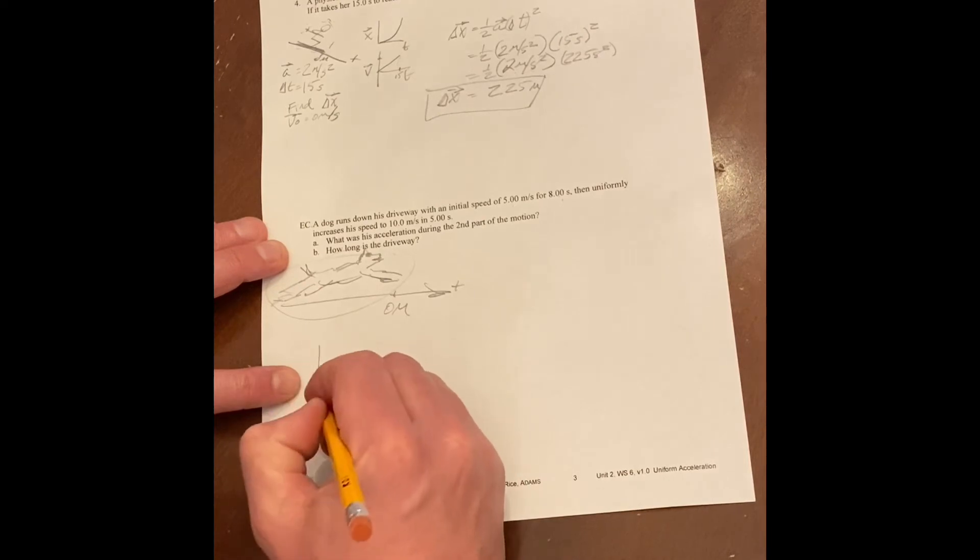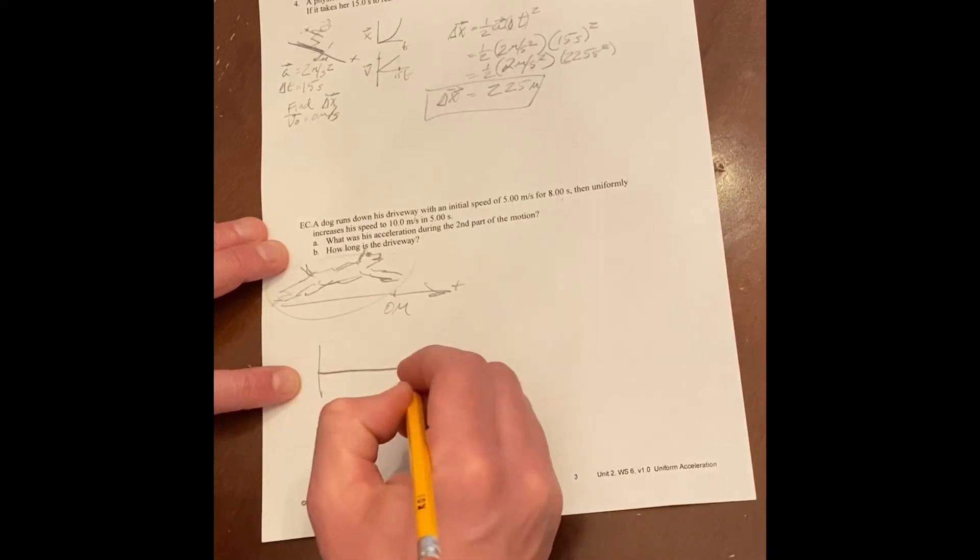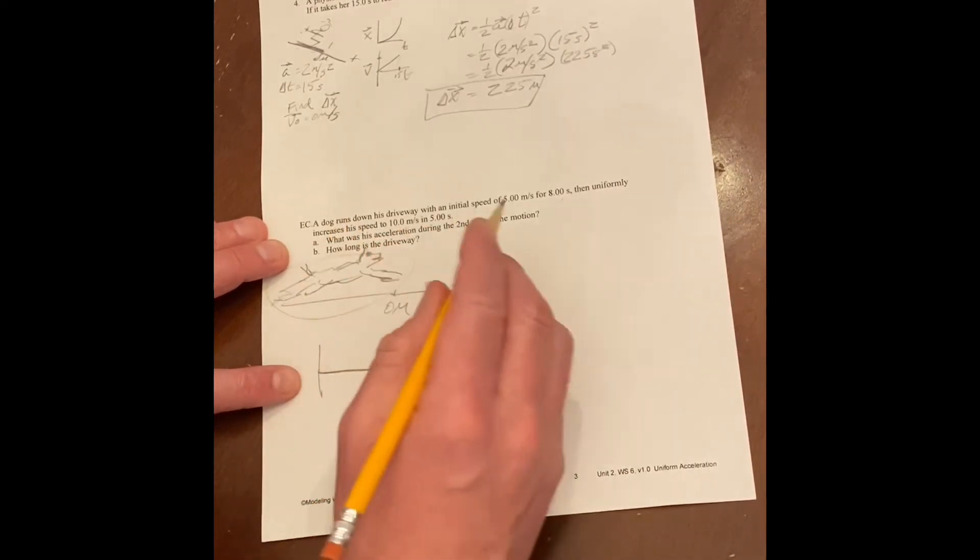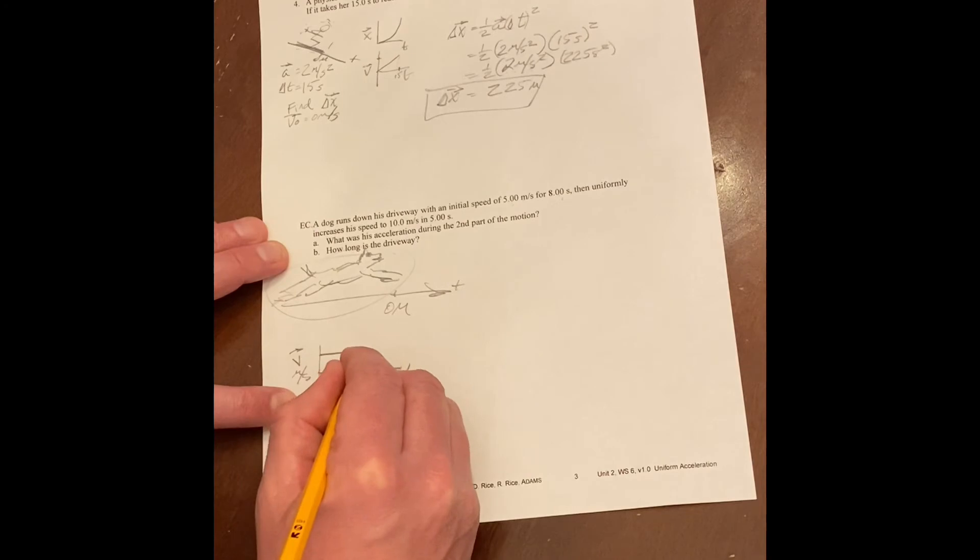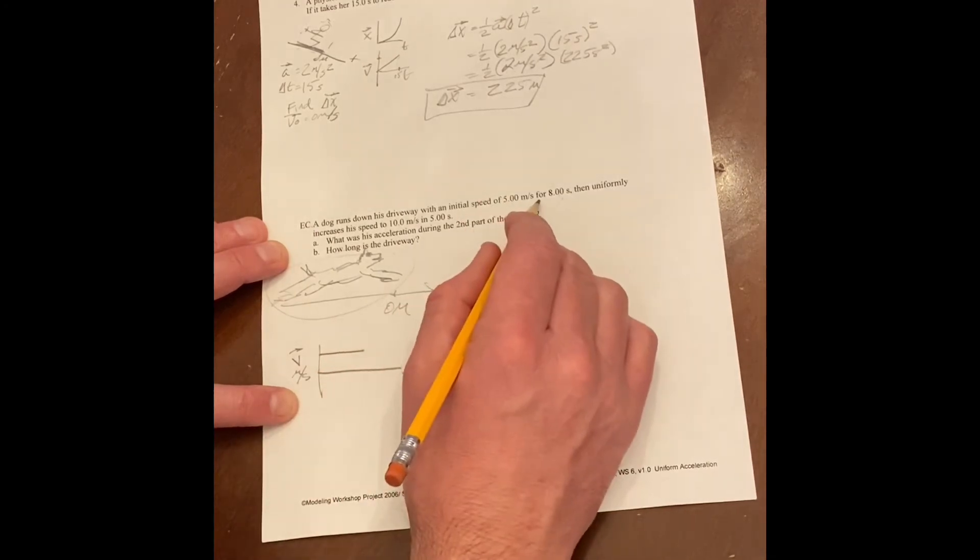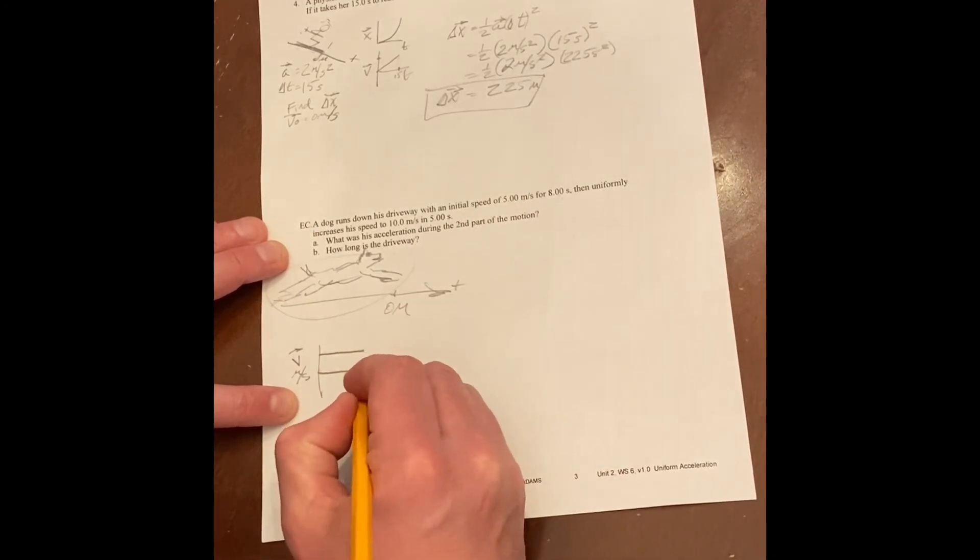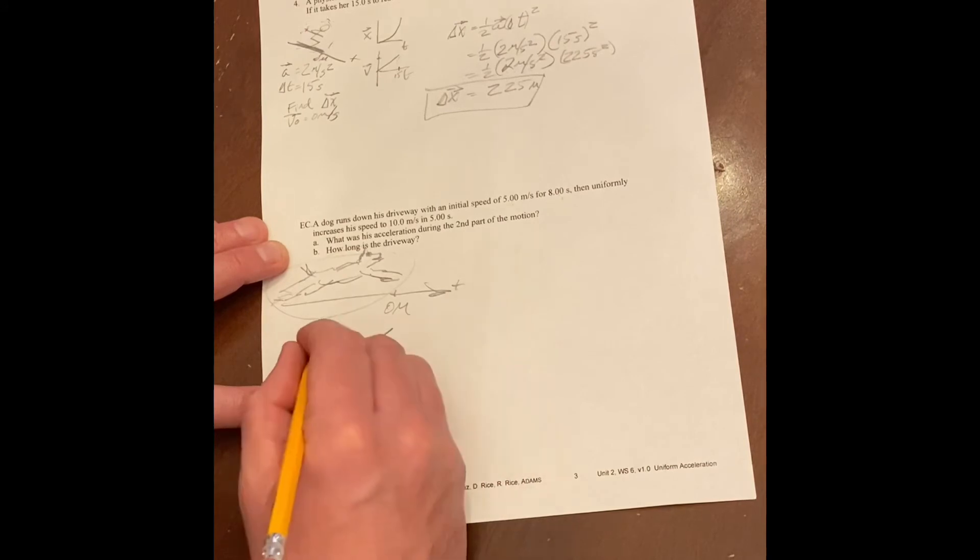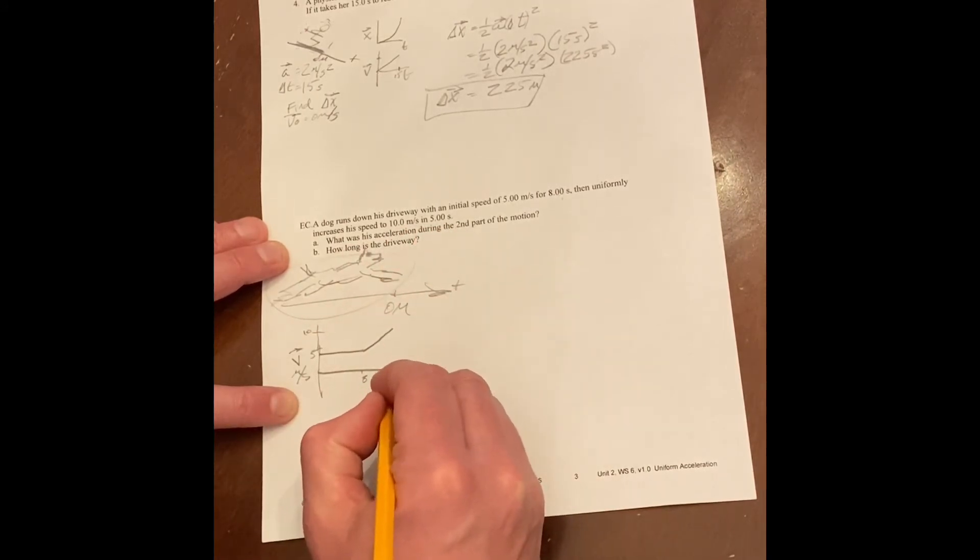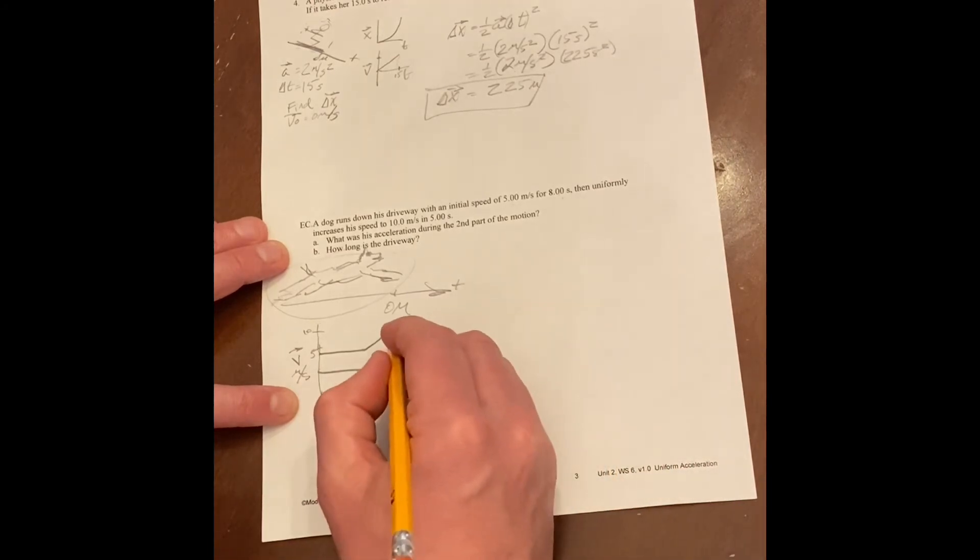I'm thinking about the velocity versus time graph first. So if you move at a constant velocity and then speed up, that means it would go to constant velocity for a while. And then at eight seconds, it speeds up to double the velocity, which I guess is 10. And that's over the next five seconds. So that'd be the 13 second mark.